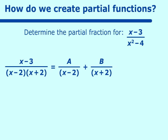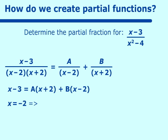We need to figure out what a and b are. We write x minus 3 equal to a times x plus 2 plus b times x minus 2. We substitute whatever makes each factor zero. Setting x equal to negative 2, the left-hand side gives negative 5, the first term becomes 0, and we are left with negative 4b.